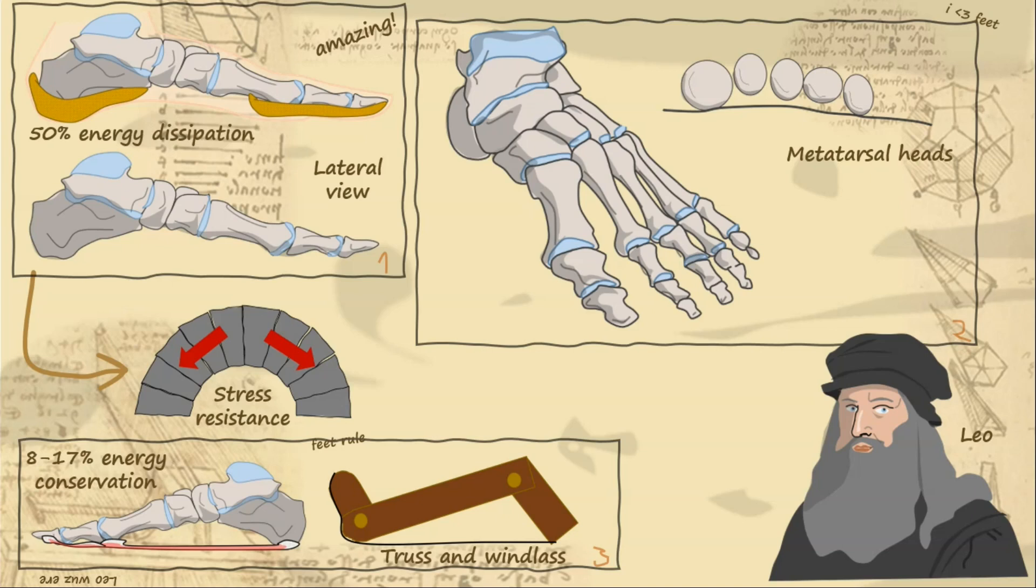Da Vinci was right to be impressed by the engineering of the human foot. It's clear that evolution has crafted it into a masterpiece of energy dissipation, redirection and conservation. These mechanisms are probably some of the factors that contributed to human beings becoming the best long-distance running animals on the planet, and are at least partly responsible for our advancement up the food chain to become the dominant species we are today.